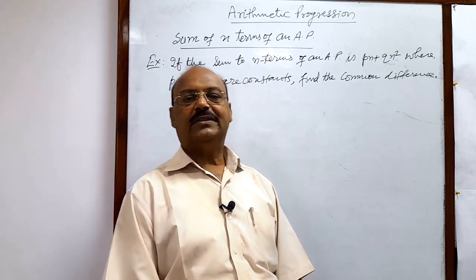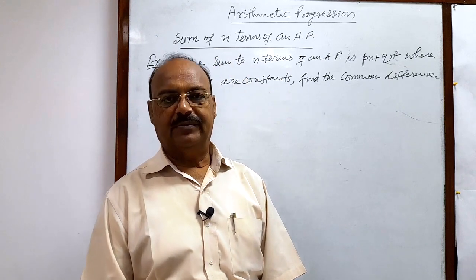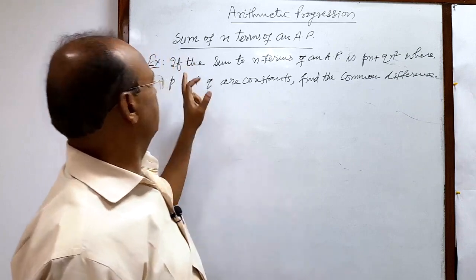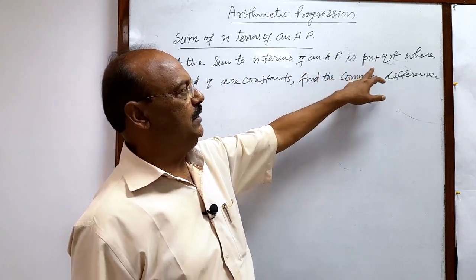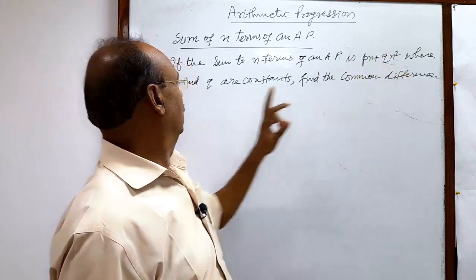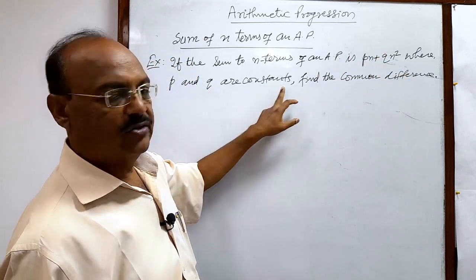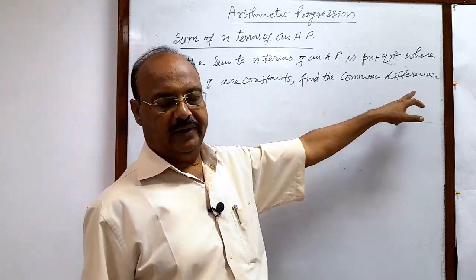Here we will see a question from the topic sum of n terms of an arithmetic progression. The question is if the sum to n terms of an arithmetic progression is pn plus qn square, where p and q are constants, find the common difference.